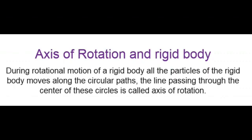Axis of rotation with rigid body has a different definition. During rotational motion of rigid body, all the particles of the rigid body move along circular paths. The line passing through the center of these circles is called axis of rotation.